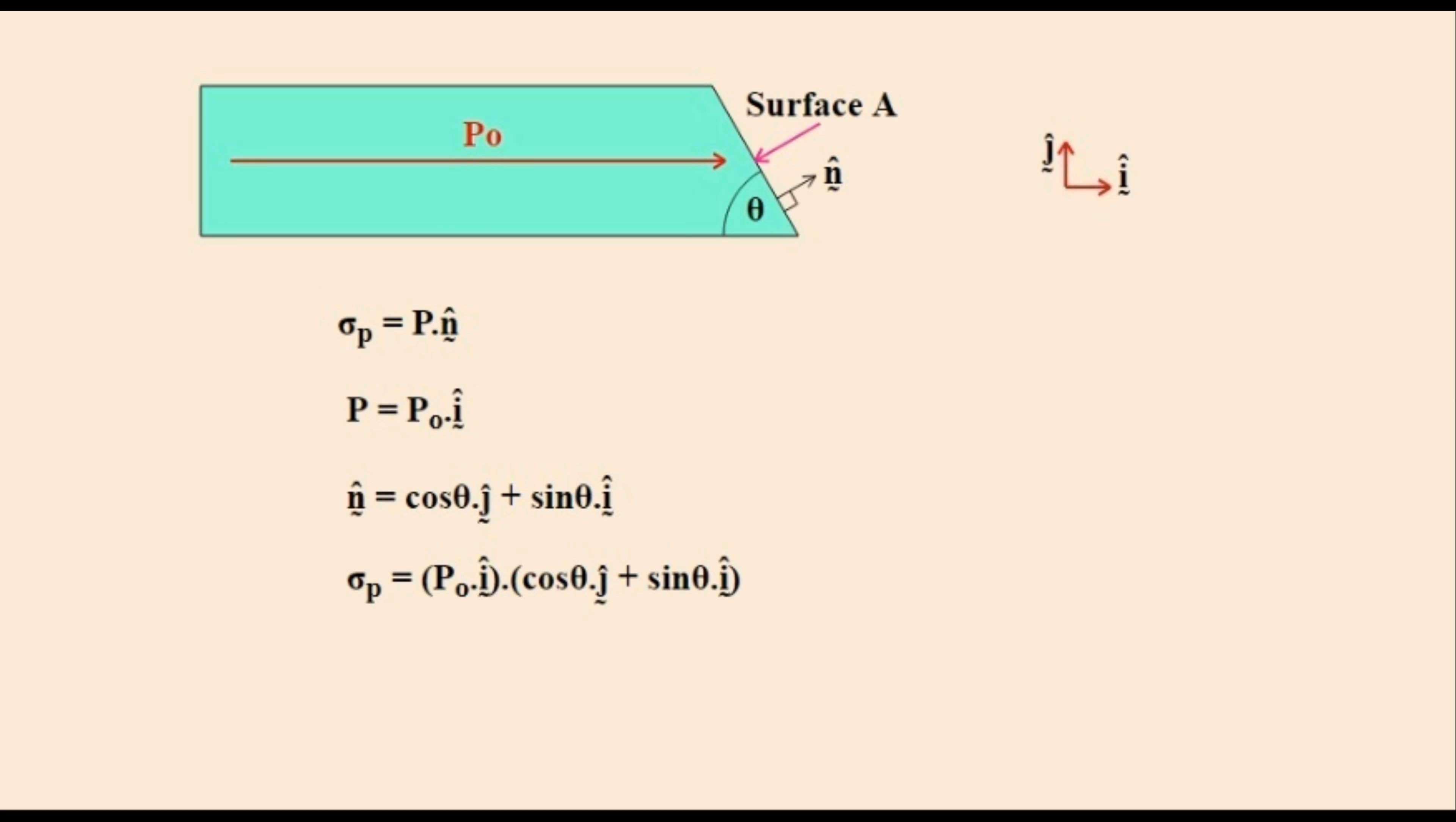Substituting these values into the first expression gives this expression for the surface charge density. It is a dot product of two vectors. Using the rules for a dot product gives us this result here. The surface charge density is proportional to sine theta.